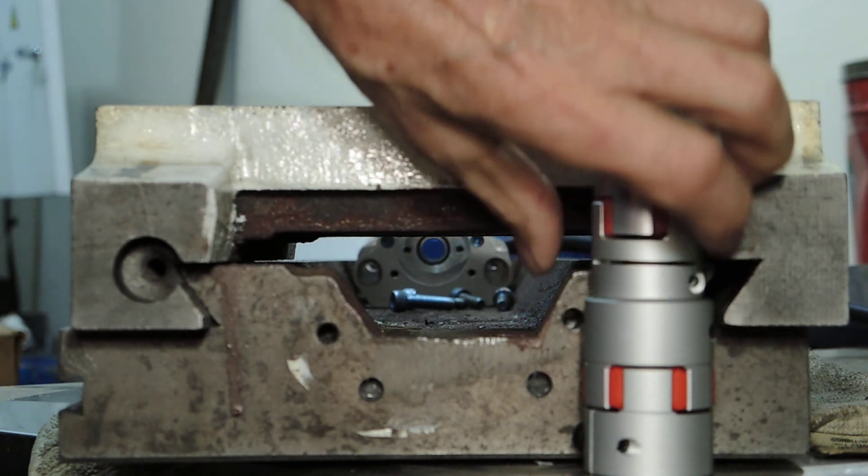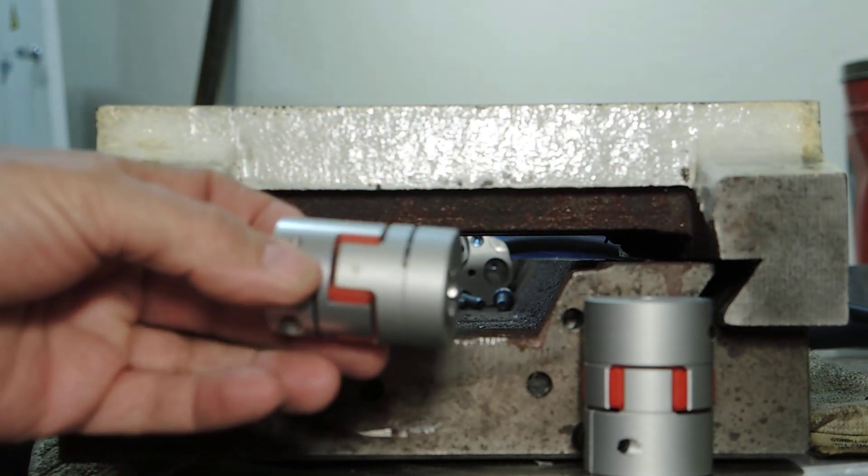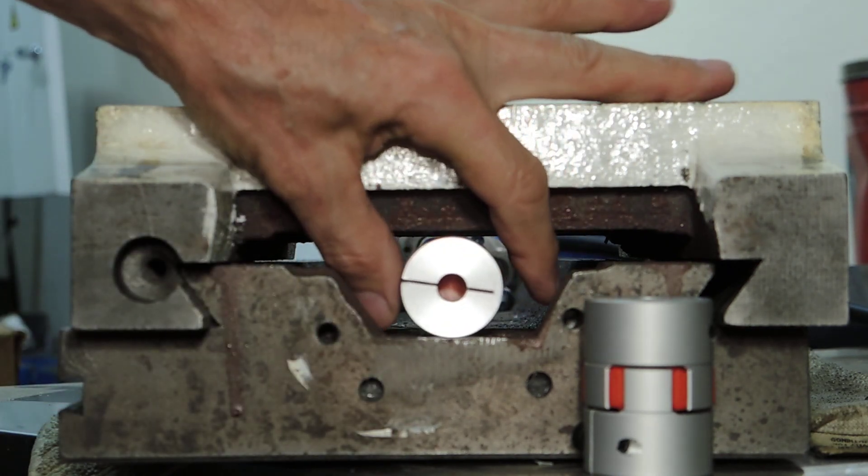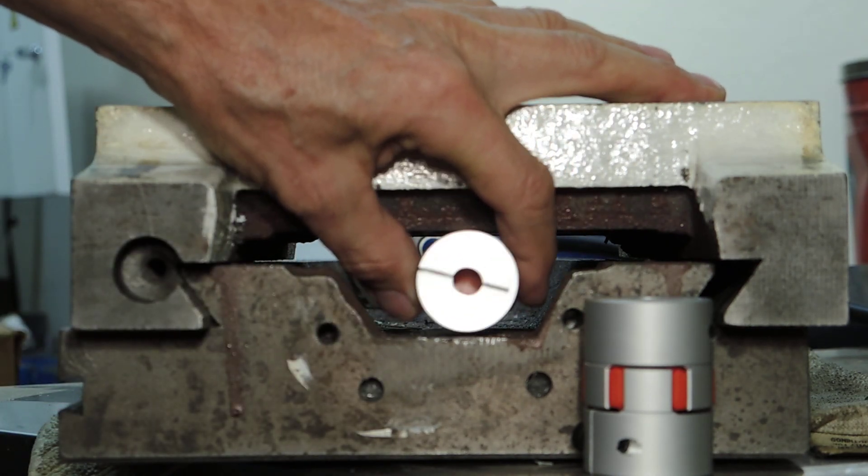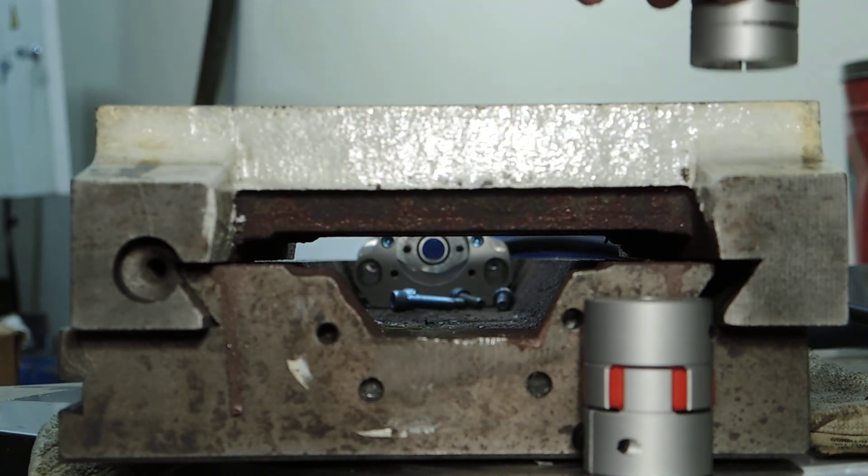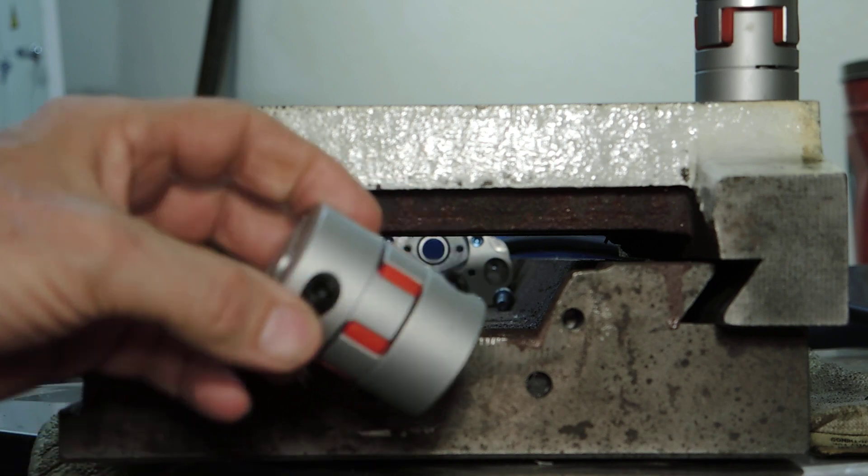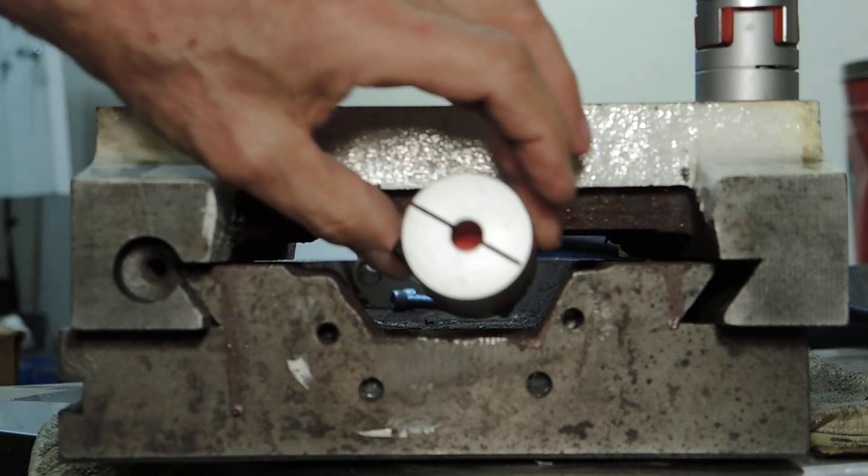I have two other couplers here. This is a 35 millimeter and it fits in here with a little bit of play, and then we have the 40 millimeter couplers. Now I would prefer to use the 40s. They're literally twice as strong as the 35s.